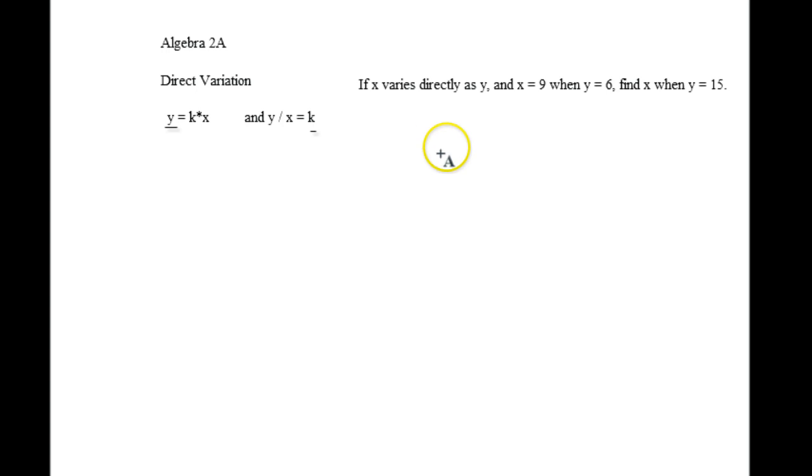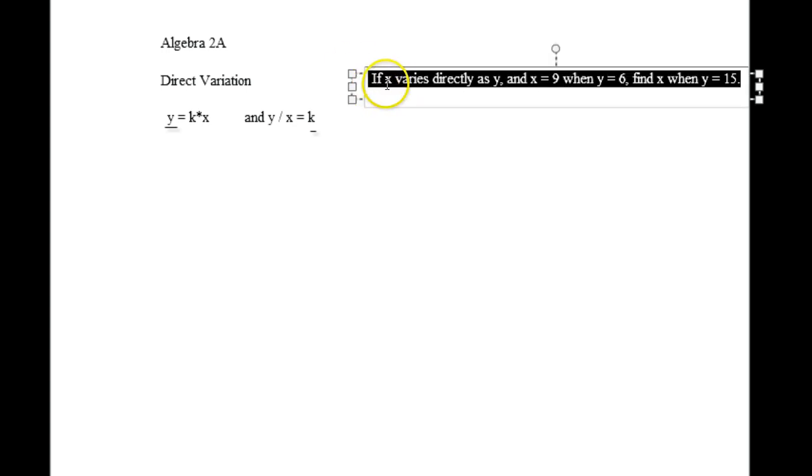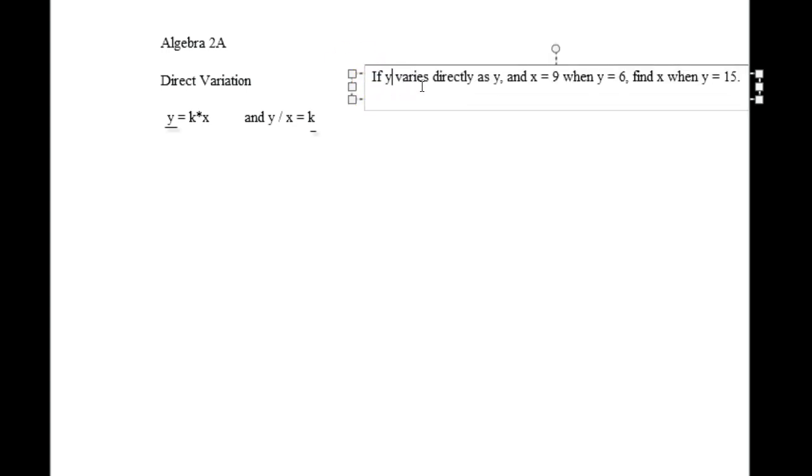If y varies directly as x, if x varies directly as y, and x equals 9 when y equals 15, find x when y equals 15. So normally this problem says, if y, let's switch it up. I'm going to switch up the letters, because usually it's that way in the book.